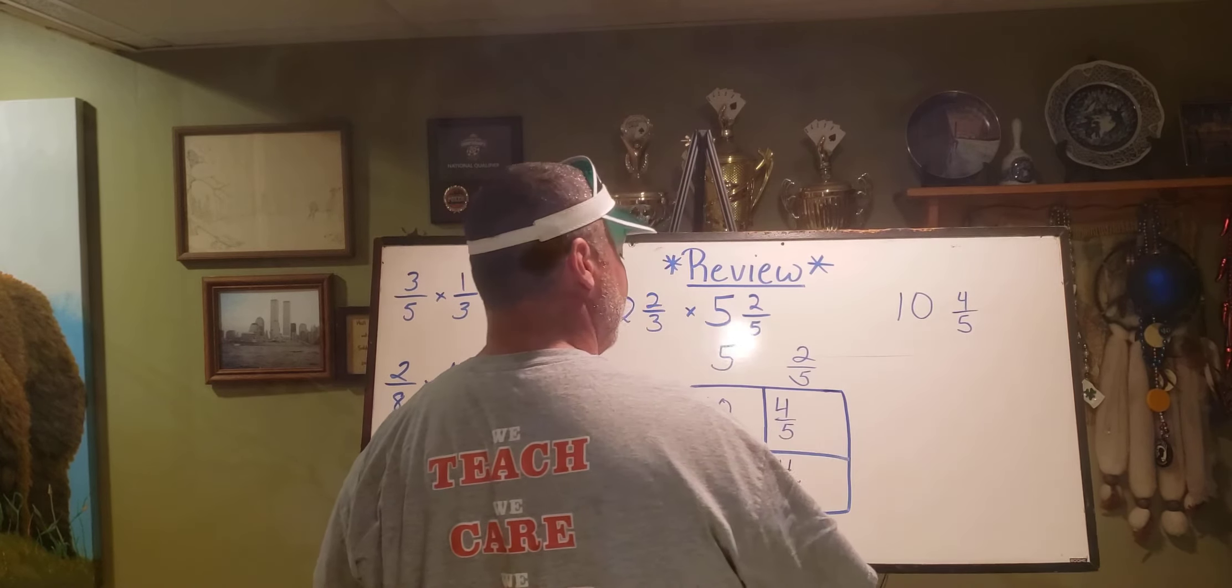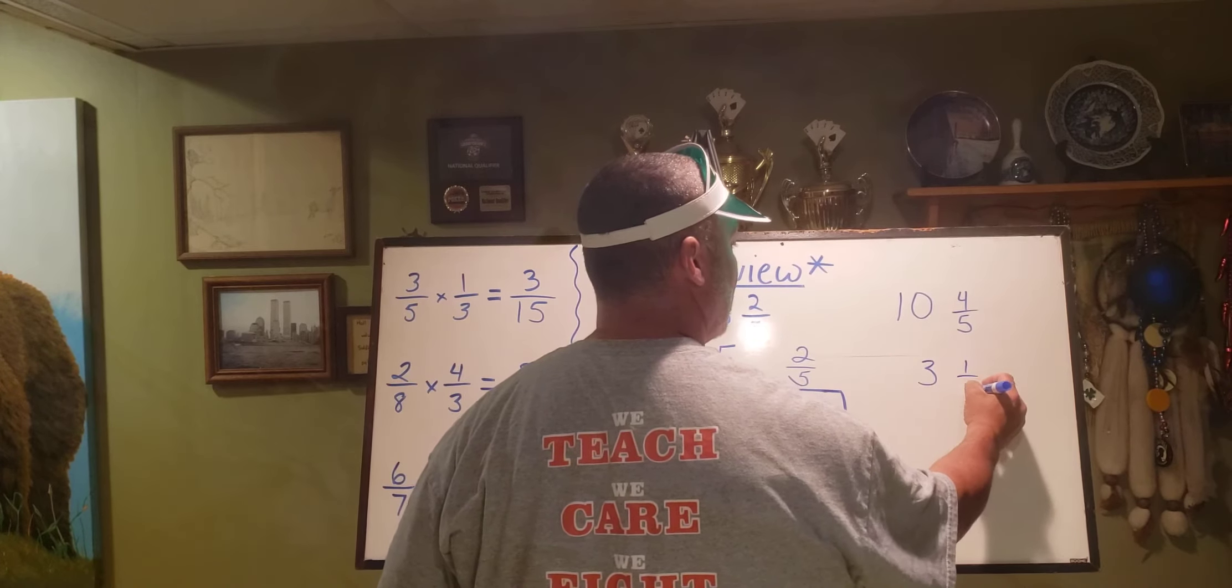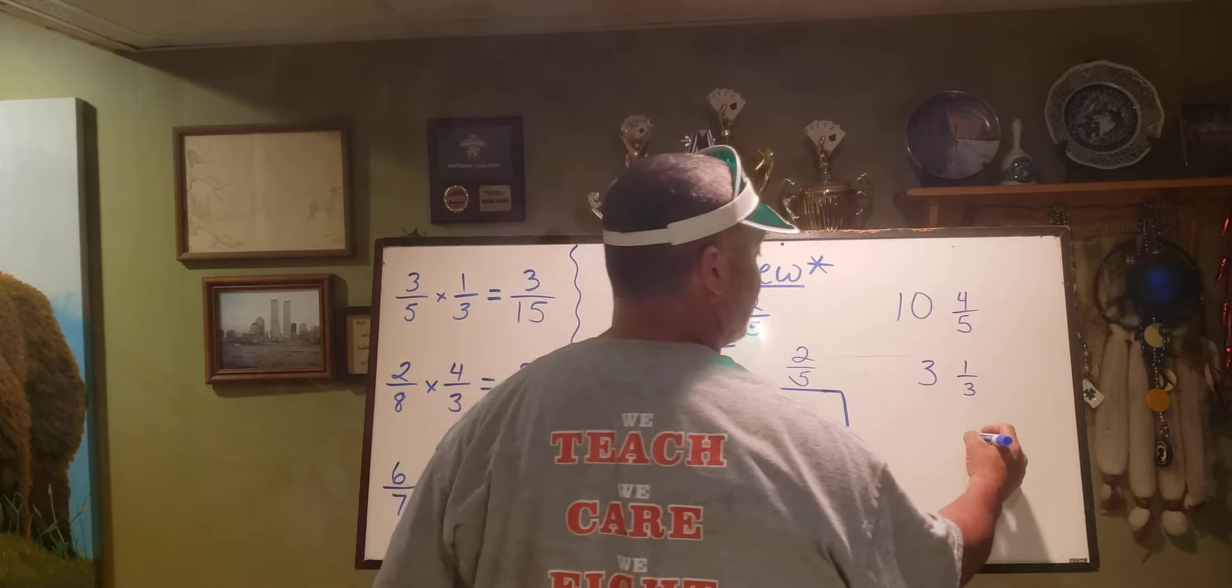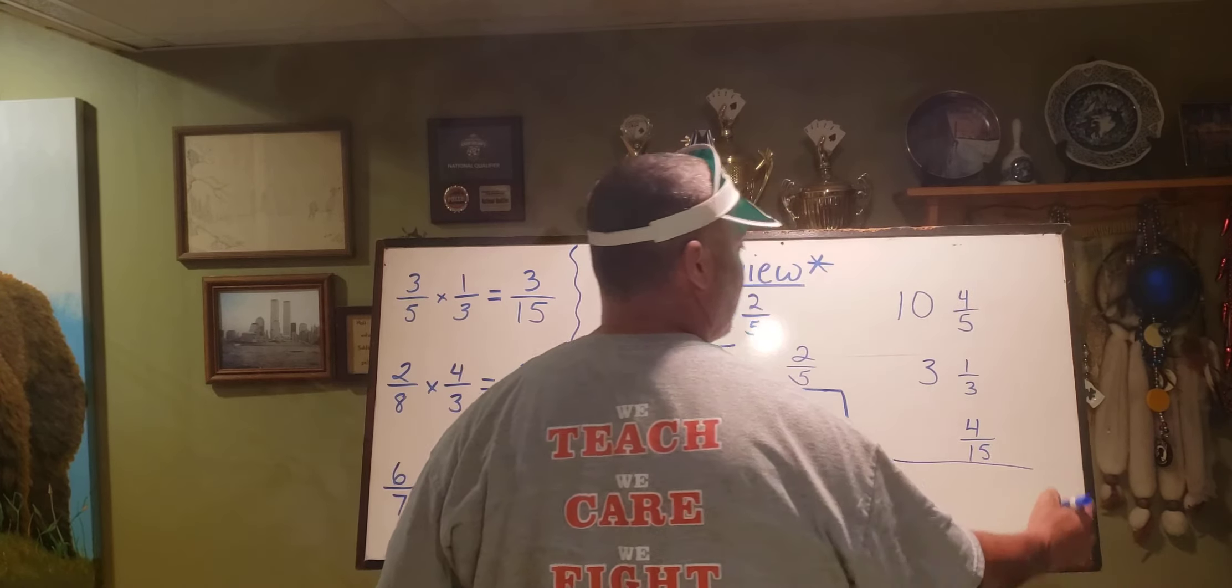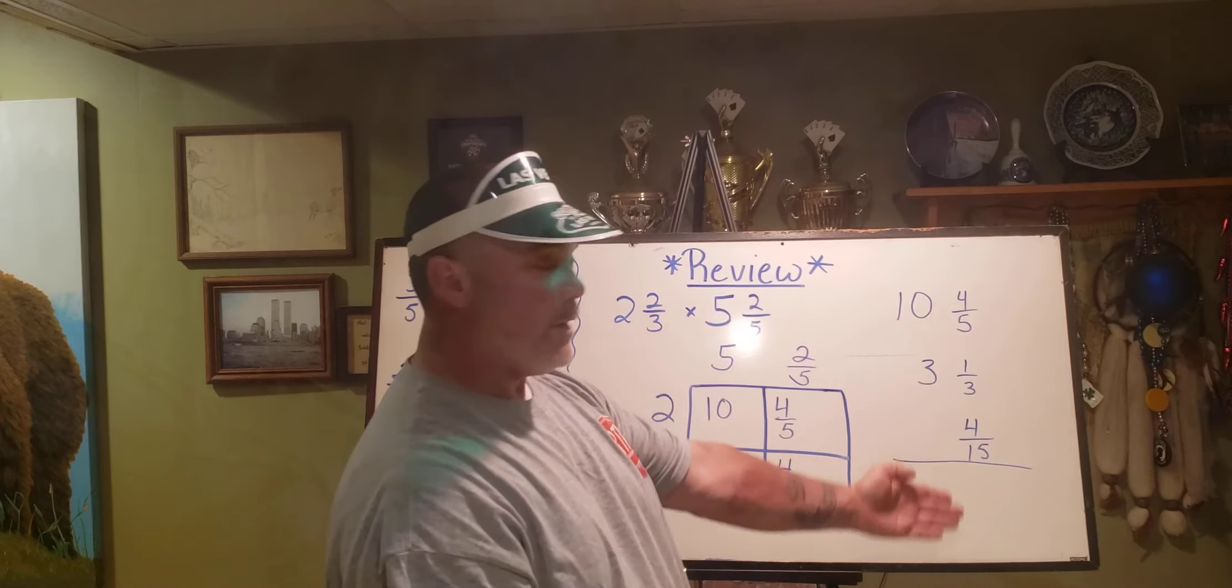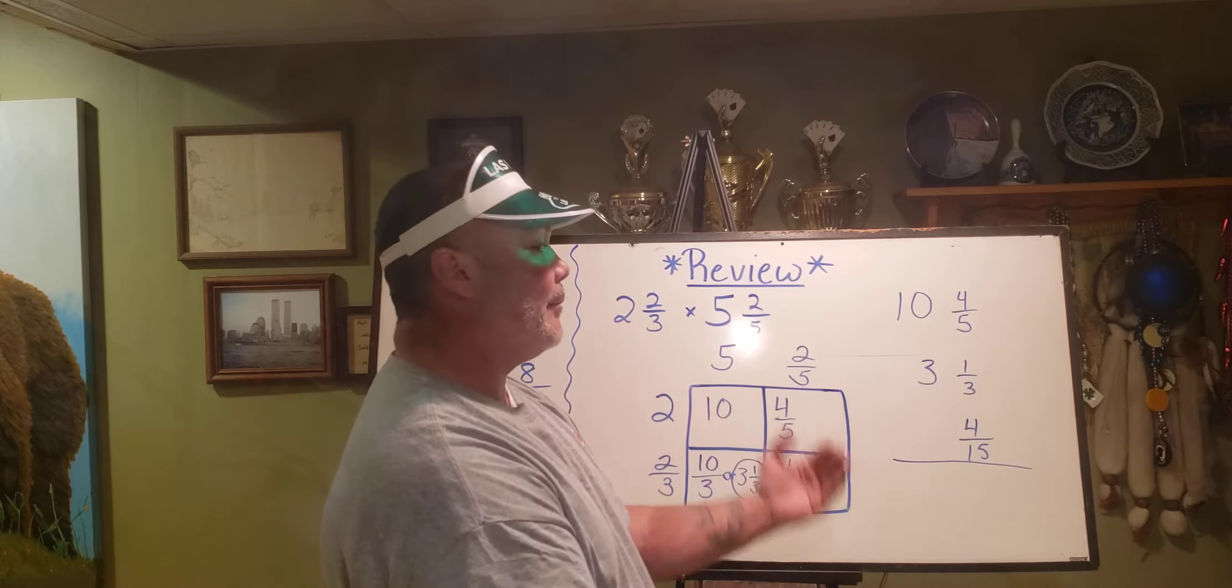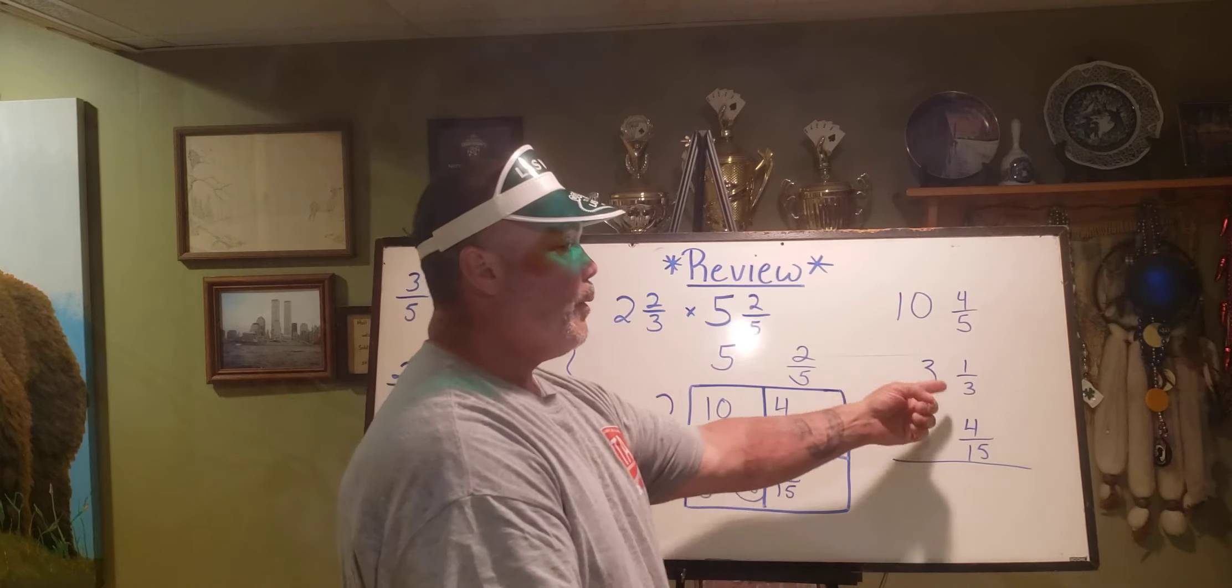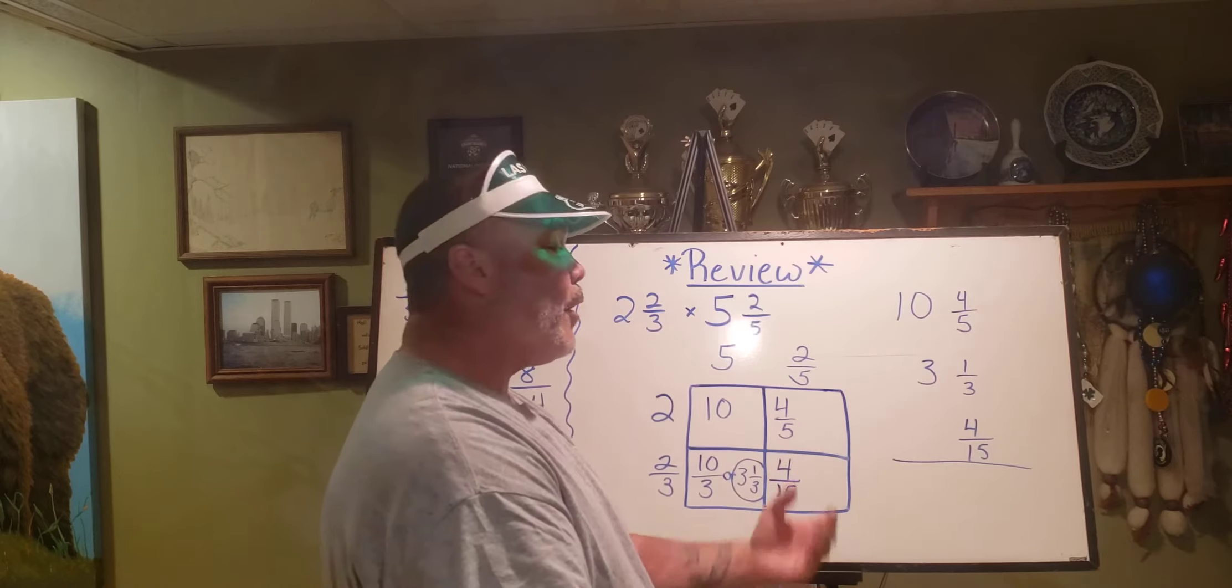And I have three and one third, and four fifteenths. Now we recognize what? We don't have a common denominator. So when we add, we have to have a common denominator. Our bottom number needs to be the same. We want equivalent fractions. When we want equivalent fractions, we multiply by a form of a whole.